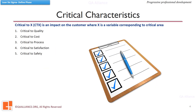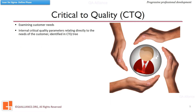Understanding customer requirements is one of the fundamental requirements in any improvement project. Identifying the Voice of Customer (VOC) helps us find out the necessary information that is important to the customer. Such relevant characteristics which should be present in your product or service offering are called critical to quality characteristics. The quality parameters which are critical and should be monitored to provide a good quality product are identified with the help of a CTQ tree diagram.